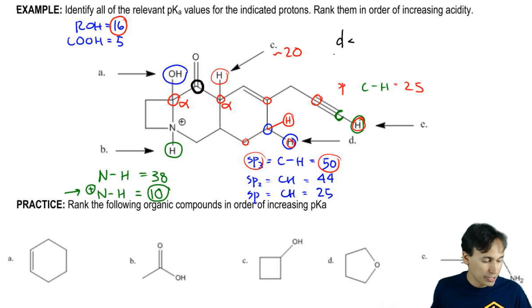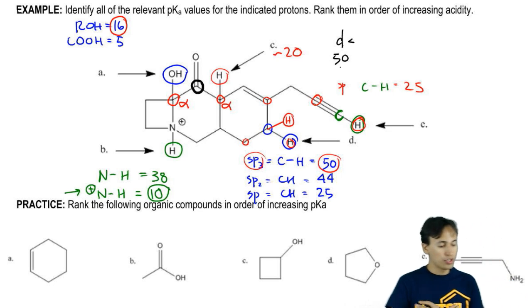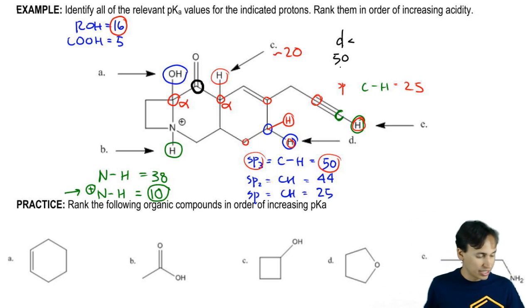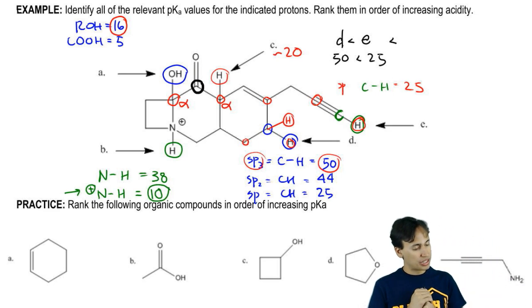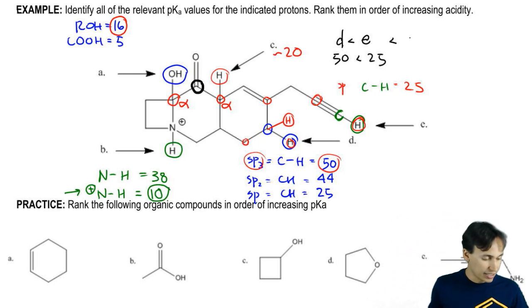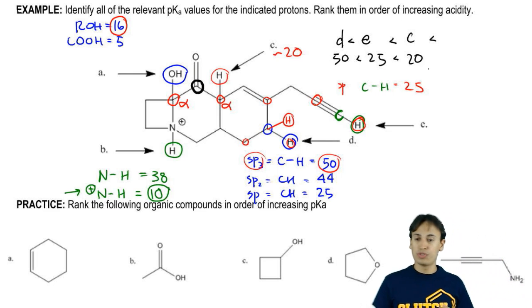D is the worst with a pKa of 50. So then which one comes next? Well, by all the pKa's that I have written down, it looks like then it's going to be E. E is going to be a little bit better or actually significantly better at 25. Let's keep going. What's getting more and more acidic? It looks like it's C. C has that alpha proton. So C has a pKa of about 20.